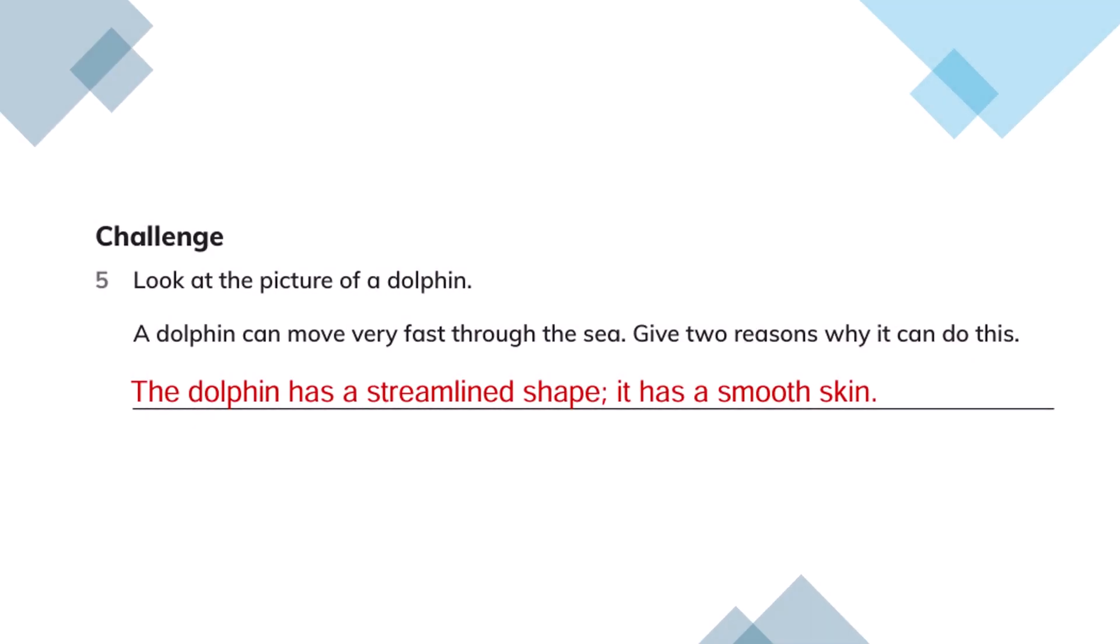Look at the picture of a dolphin. A dolphin can move very fast through the sea. Give two reasons why it can do this. The dolphin has a streamlined shape. It has a smooth skin.